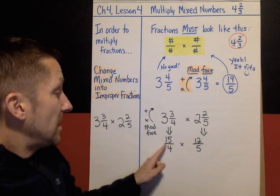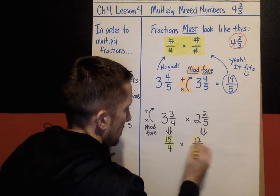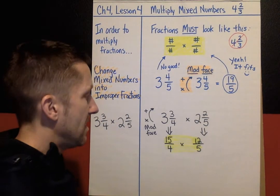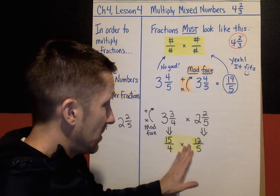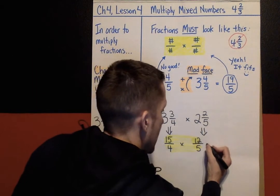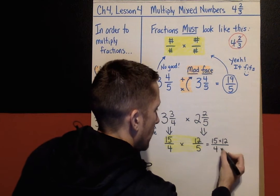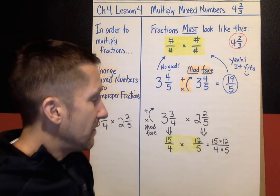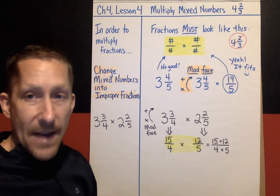Now it looks like number over number times number over number — now I can multiply! It's numerator times numerator over denominator times denominator. However, I'm going to simplify first because I don't want to deal with fifteen times twelve. I'll simplify before I multiply. Here are my numerators and denominators: from last lesson, if a numerator and a denominator share a common factor, you can simplify with those two numbers.